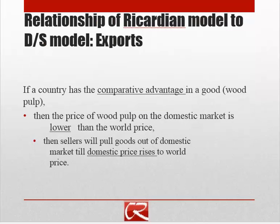Again, trying to map things with the Ricardian model and figure out what matches up with what: remember that if a country has the comparative advantage in a good, then it has a lower opportunity cost of producing it than other countries do. Another way of thinking about that is that the price of the good would be low in the domestic market before trade.